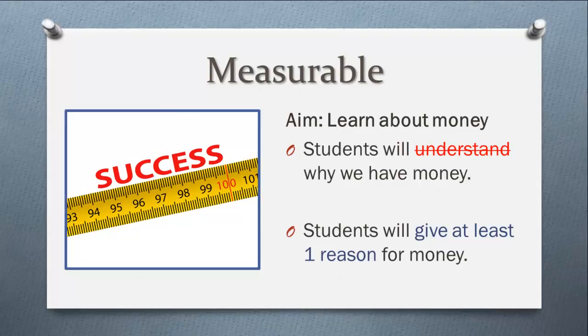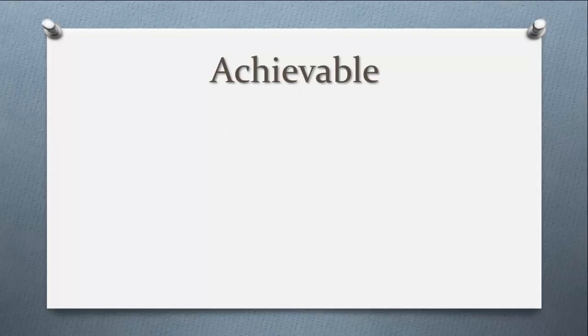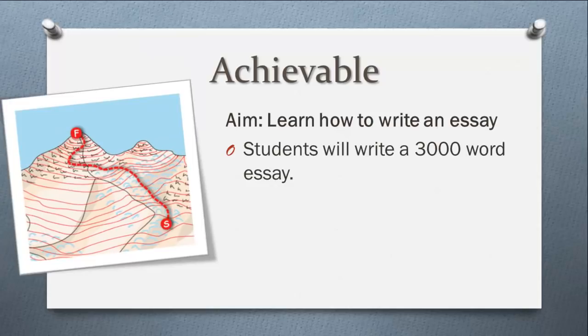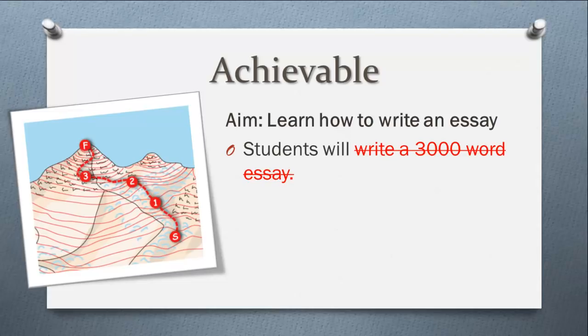Next, we need to make our objectives achievable. If we were trying to teach students how to write an essay, we could say that students will write a 3,000 word essay. This definitely would help them to learn how to write an essay, but it is like climbing a mountain in one go. Mountain climbers always plan their ascent in stages, so we need to plan the writing of the essay in stages as well. So instead of saying write 3,000 words, we could get the students to write a paragraph of an essay.